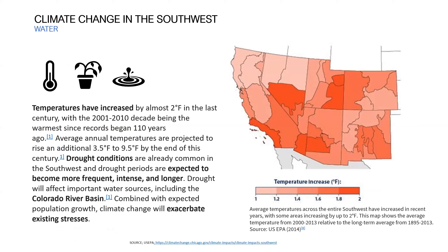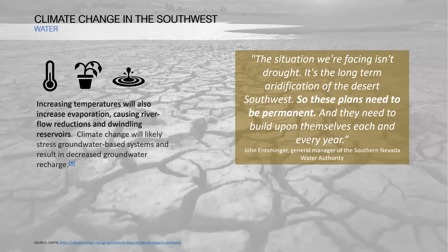The Southern Nevada Water Authority has framed this well: the situation isn't just drought — we are looking at the long-term aridification of the desert southwest. Anything done now to implement water resiliency and adaptation planning should not be considered temporary; we need permanent, evolving solutions. Temperature changes aren't just periodic dry spells — stress on aquatic systems, rivers, and streams is already happening, with many drying up in summer, and groundwater is also being impacted.